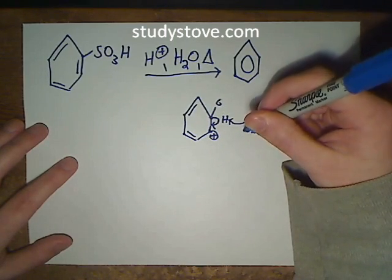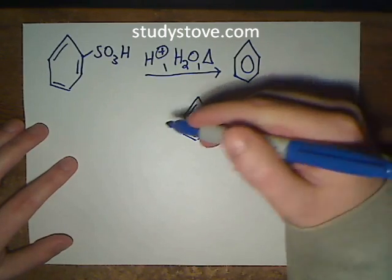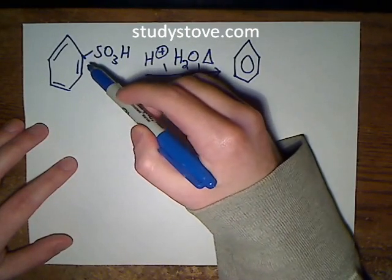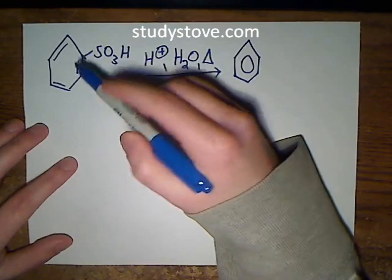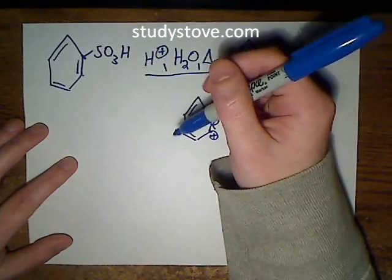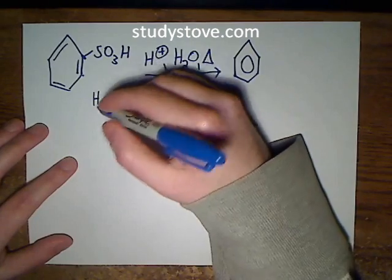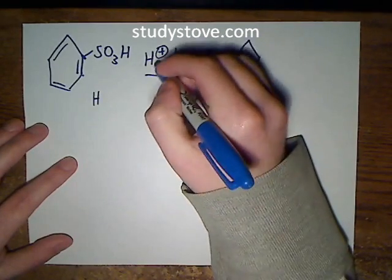So the reverse of that would be having an acid come in and add a proton to this carbon to form a carbocation. That's what we're going to do. The acid I'm going to use is the hydronium ion because we're doing this reaction in dilute acid in water.